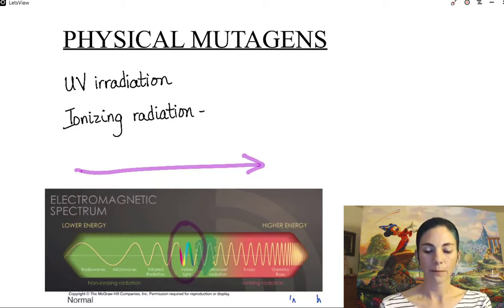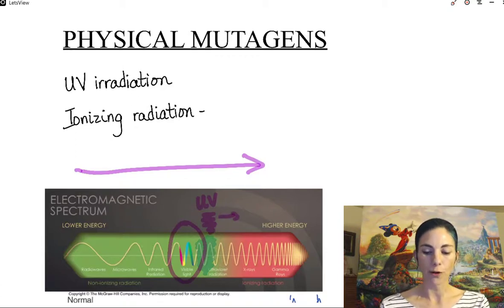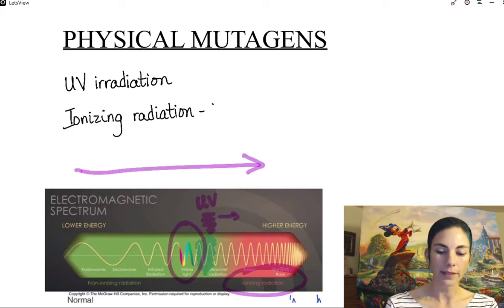Visible light is here, but then directly to the right of it here is UV light or ultraviolet light. And then as you move farther over, you get into a group that are called the ionizing radiation, which includes x-rays and gamma radiation.